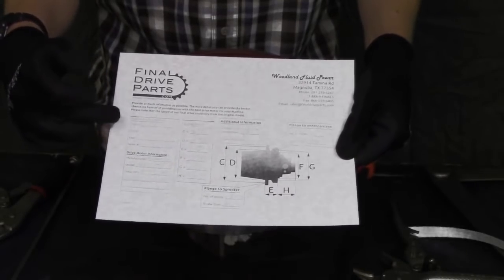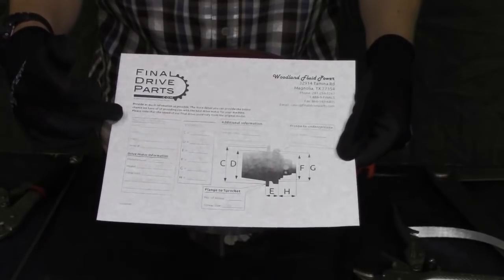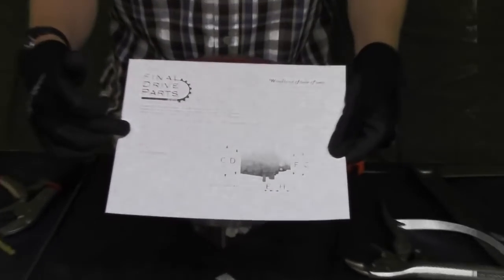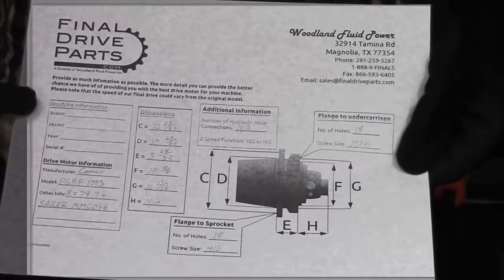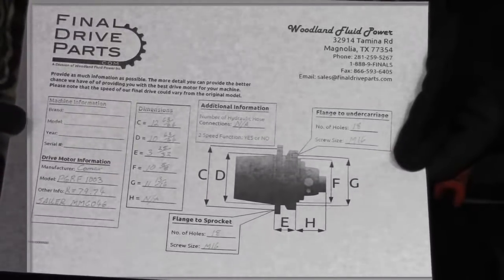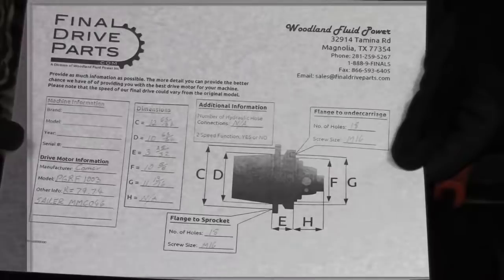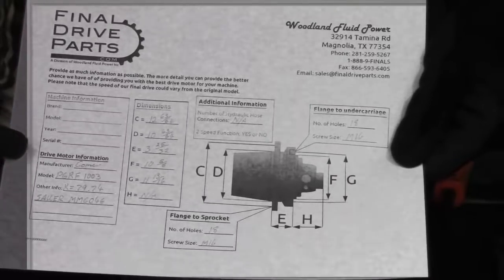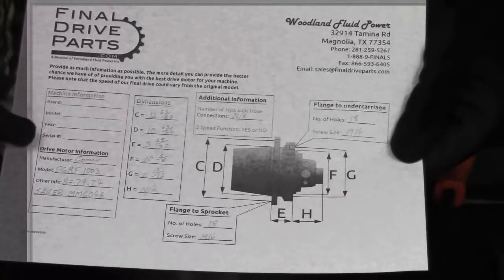You can see over here on the left that we have some machine information: brand, model, year, serial number. Fill out what you can on there, please. The more information you give us, the easier our job is to make sure we get the right drive for you. That's machine information.